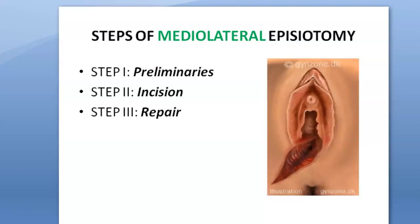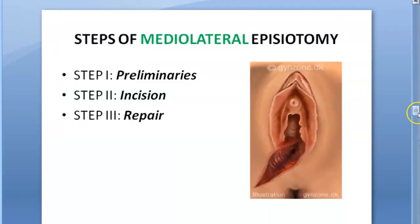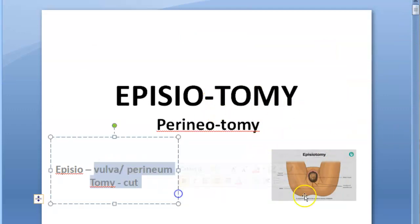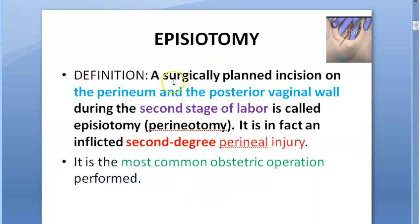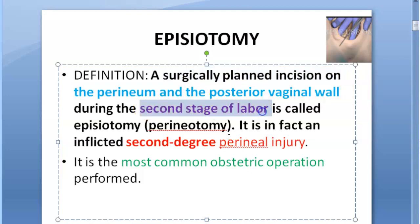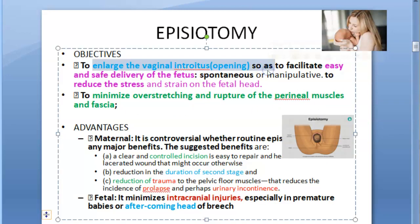Let's take a recap of what we have seen so far. We started off with episiotomy, or perineotomy — it is the cut on the vulva or the perineum. Basically, this is a surgically planned incision on the perineum and the posterior vaginal wall during the second stage of labor. This is a second-degree perineal injury and the most common obstetric operation. The vaginal opening will be large enough for a safe and easy delivery of the fetus.